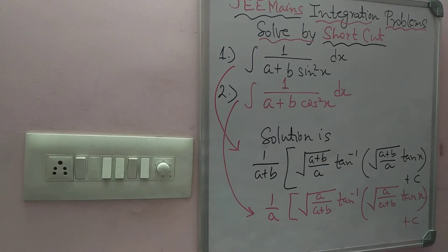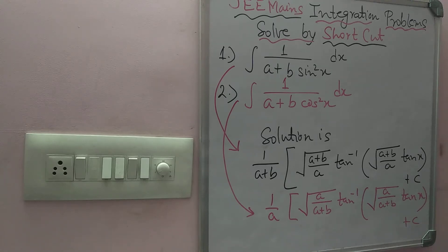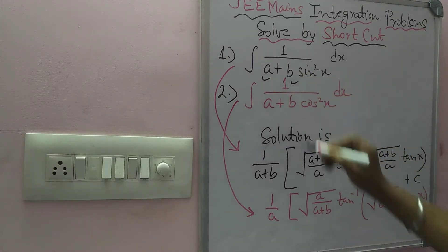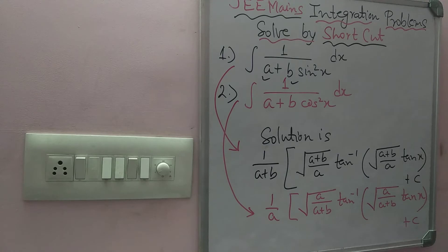Hello everybody. Today's problem is integration by shortcut method. The first problem format is integration of 1 by (a plus b·sin²x), and the second is integration of 1 upon (a plus b·cos²x). If any problem is given in these formats, a and b can be any value — any number they can give you.